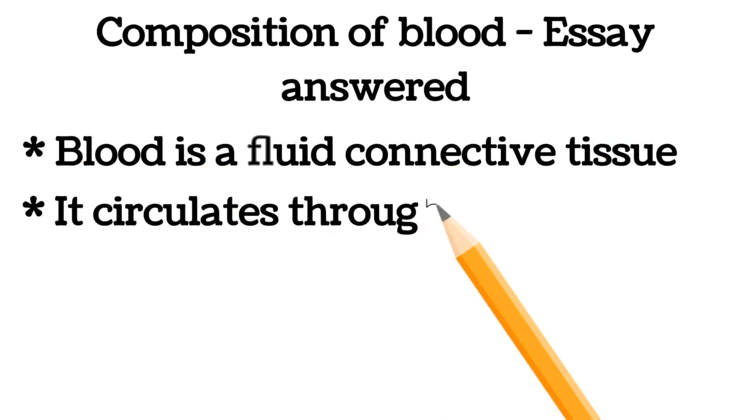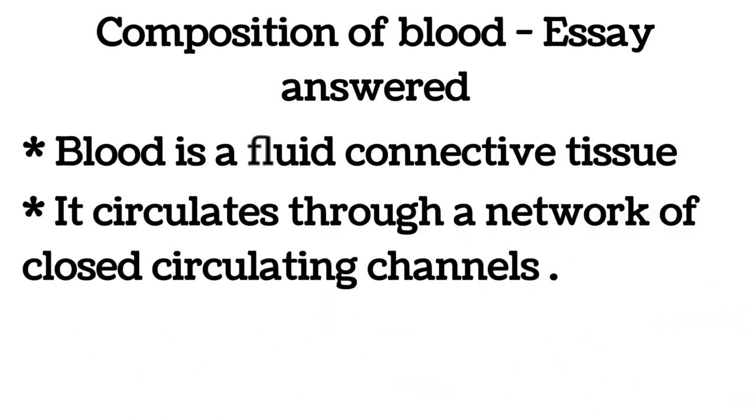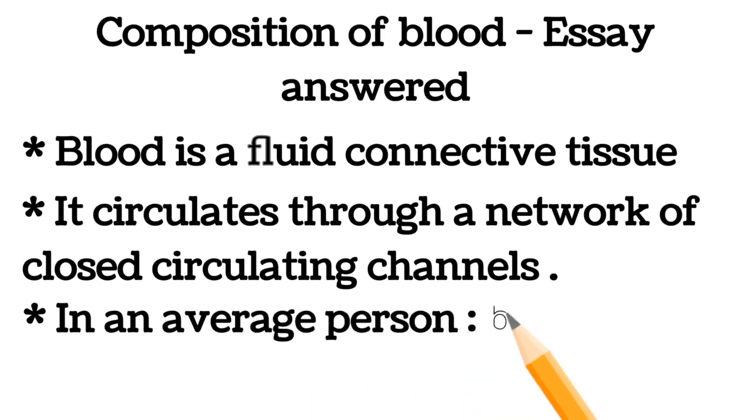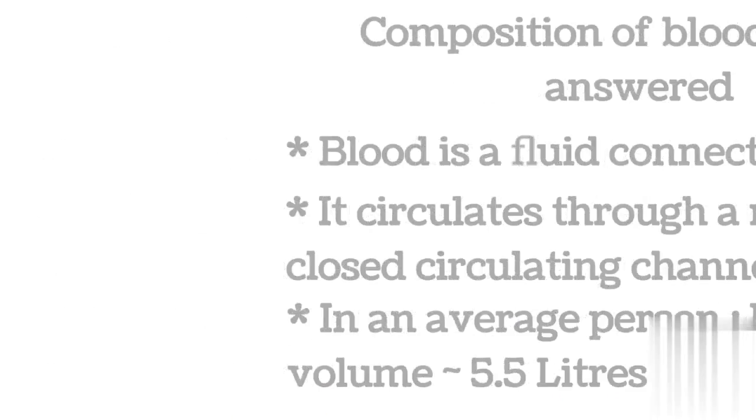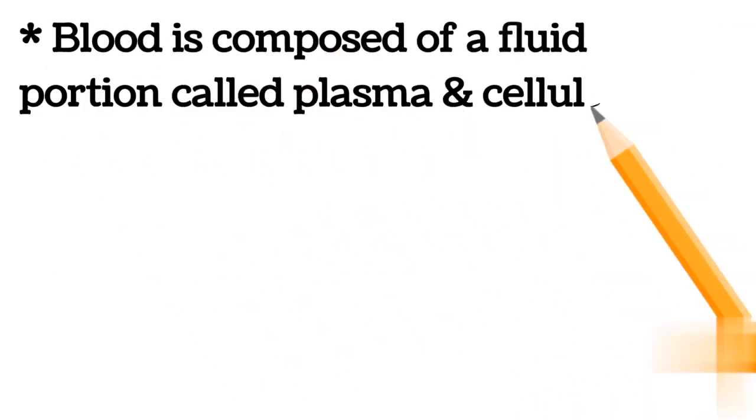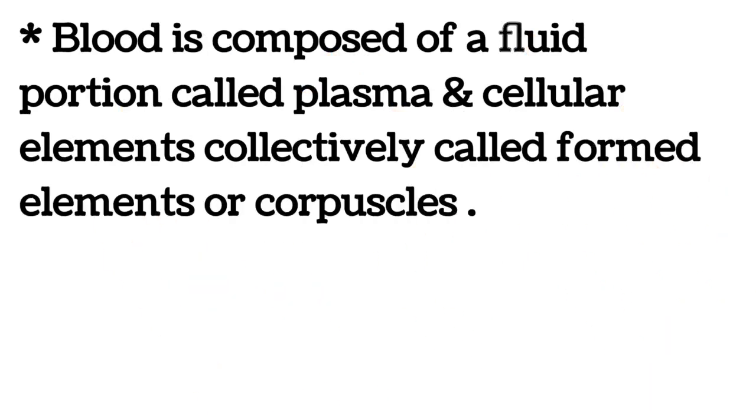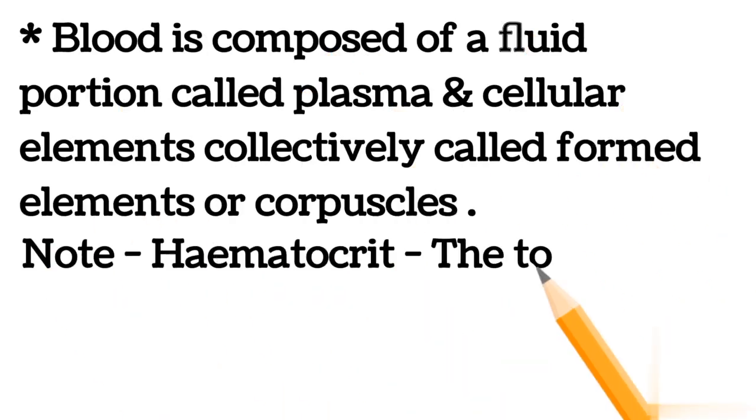Blood is a fluid connective tissue. It circulates through a network of closed circulating channels. In an average person, blood volume is 5.5 liters. Blood is composed of a fluid portion called plasma and cellular elements collectively called formed elements or corpuscles.